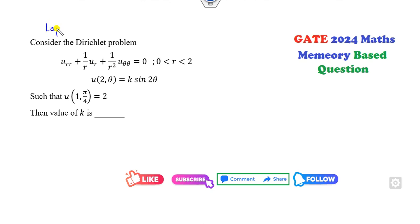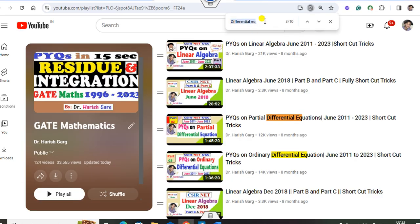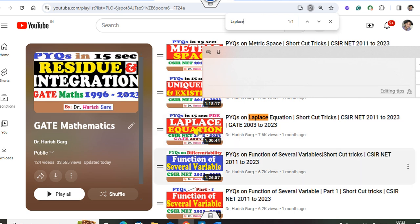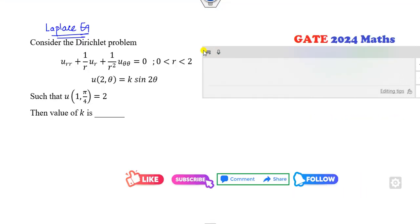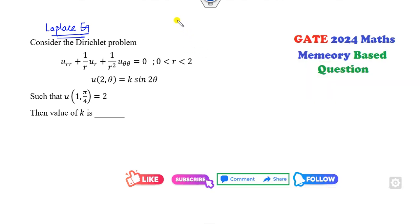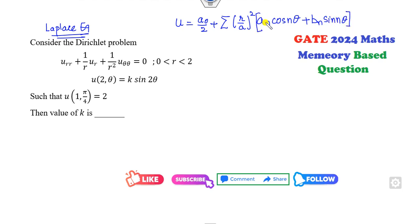The next question involves the Laplace equation. I have explained this same type of question in my Laplace equation PY question series, where you can see various shortcut tricks. The solution is of the form: u = Σ (r/a)ⁿ [Aₙ cos(nθ) + Bₙ sin(nθ)]. There is no need to solve the problem from scratch — you can solve it within 10 seconds by comparison.